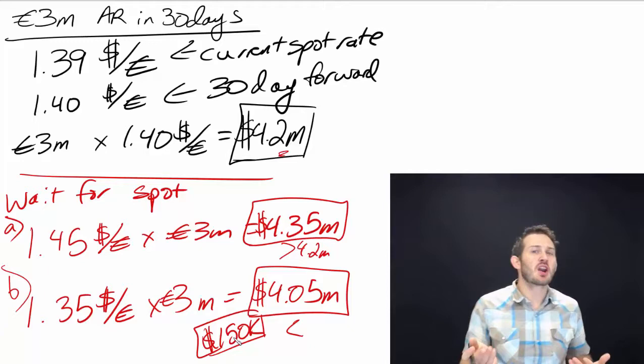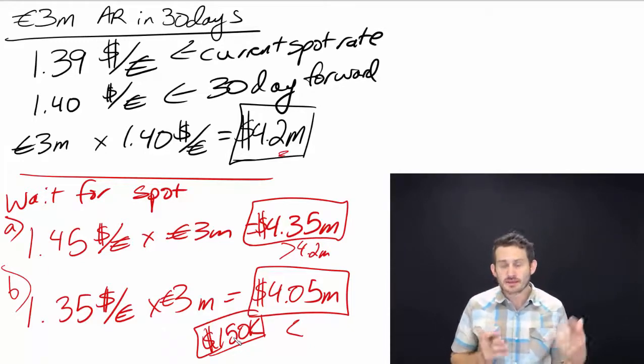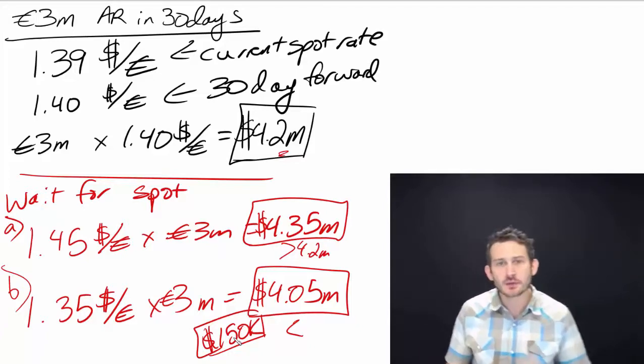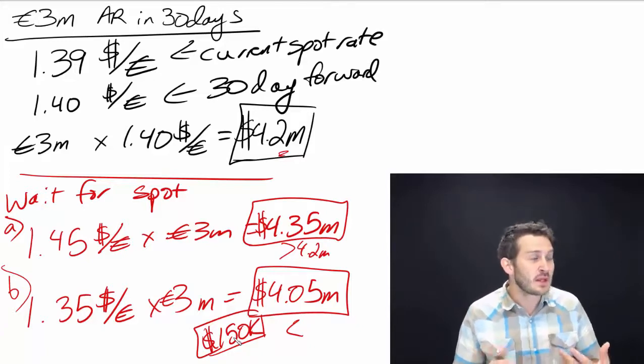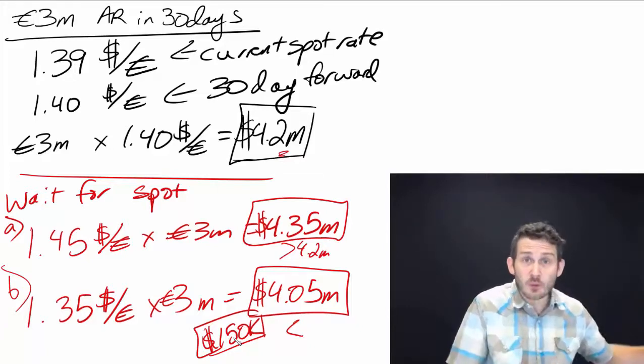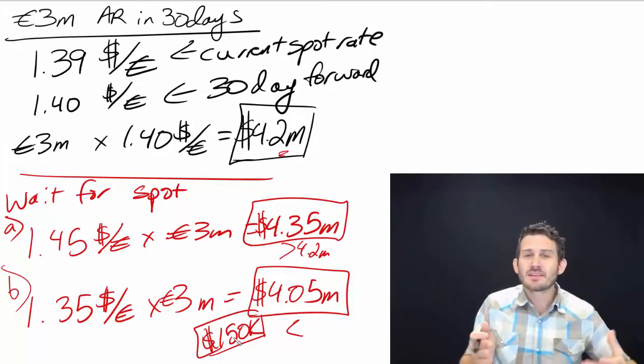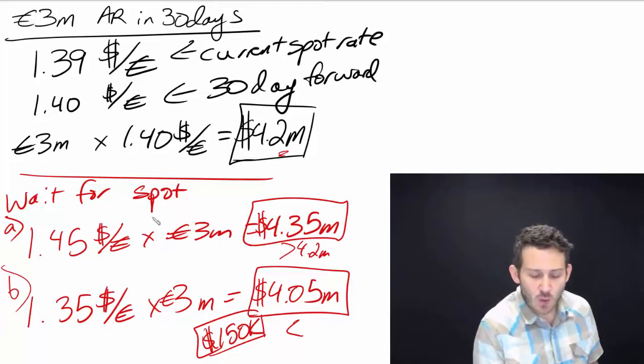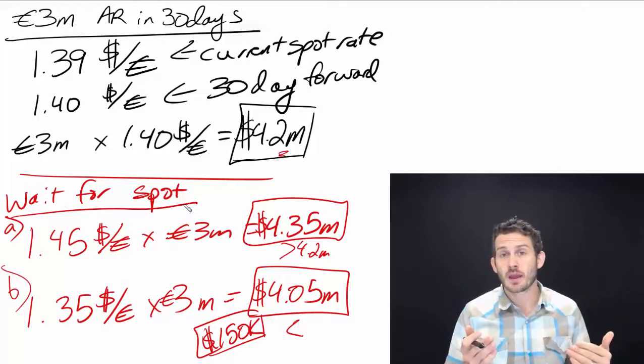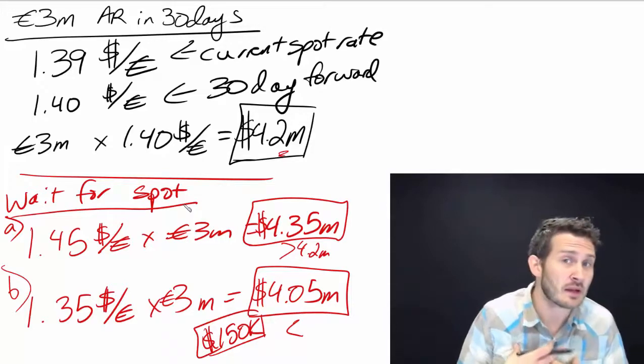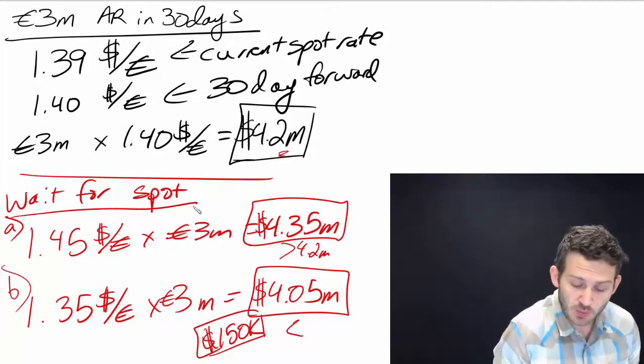I am a startup company - I don't have the ability to take on this risk. Some companies might be able to handle this risk, but this is really risky. That $150,000 might make the difference between hiring more people or being able to pay my suppliers. That is actually a pretty big deal. So if we wait to see what the spot rate is in 30 days, that fluctuation can change.